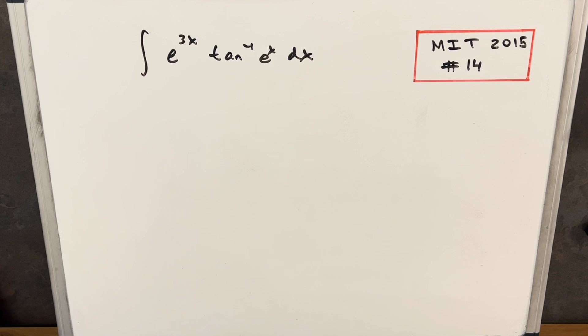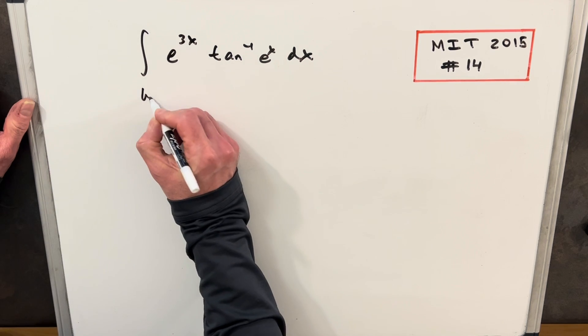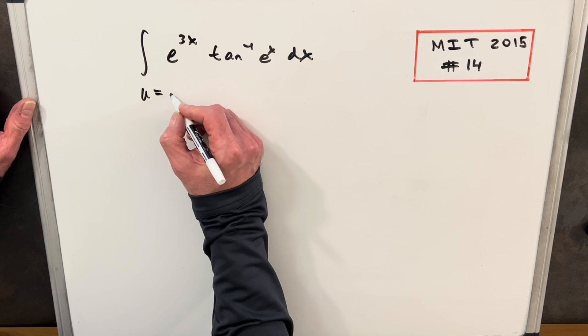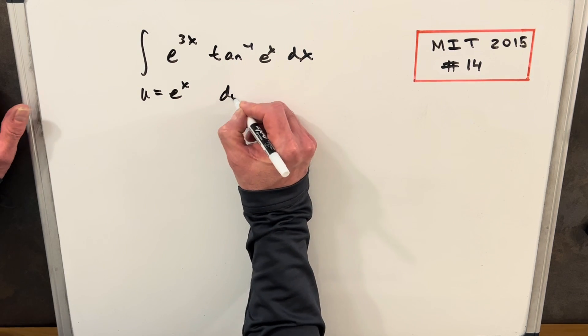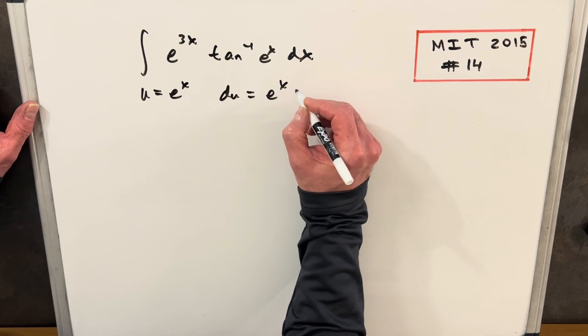Right away I think we need to do a u substitution. I guess we don't need to, but I'd like to make it look a little nicer because we can substitute for e to the x. So if we do u equals e to the x, then our du is going to be e^x dx.